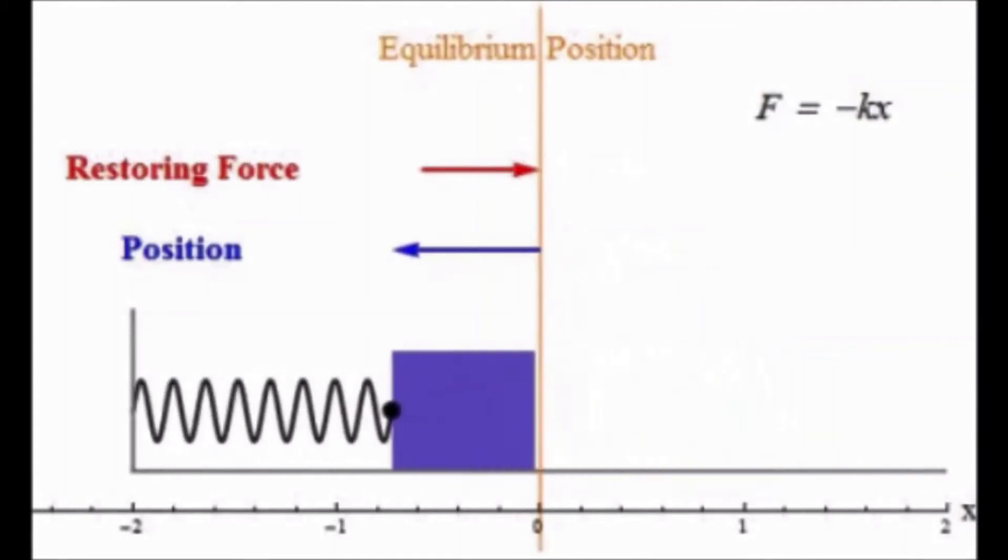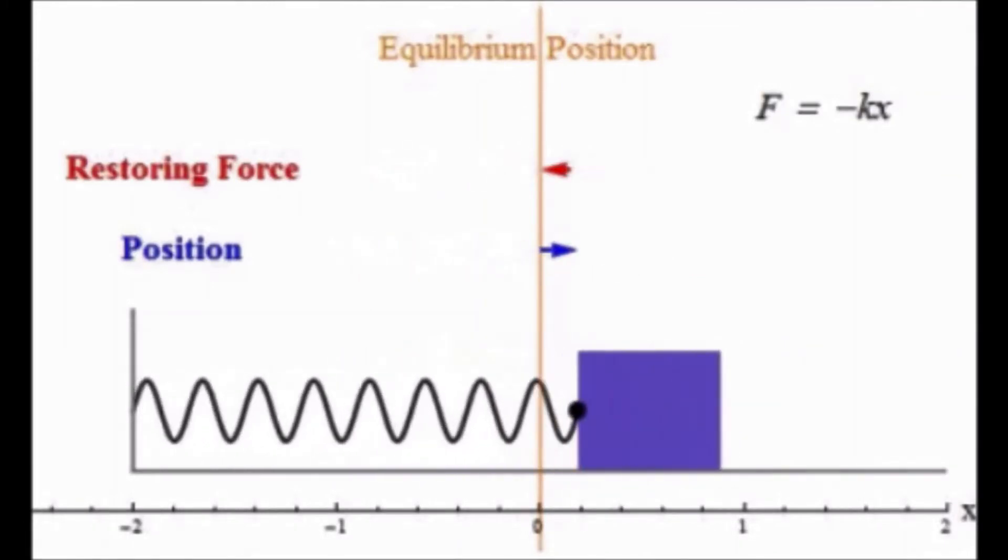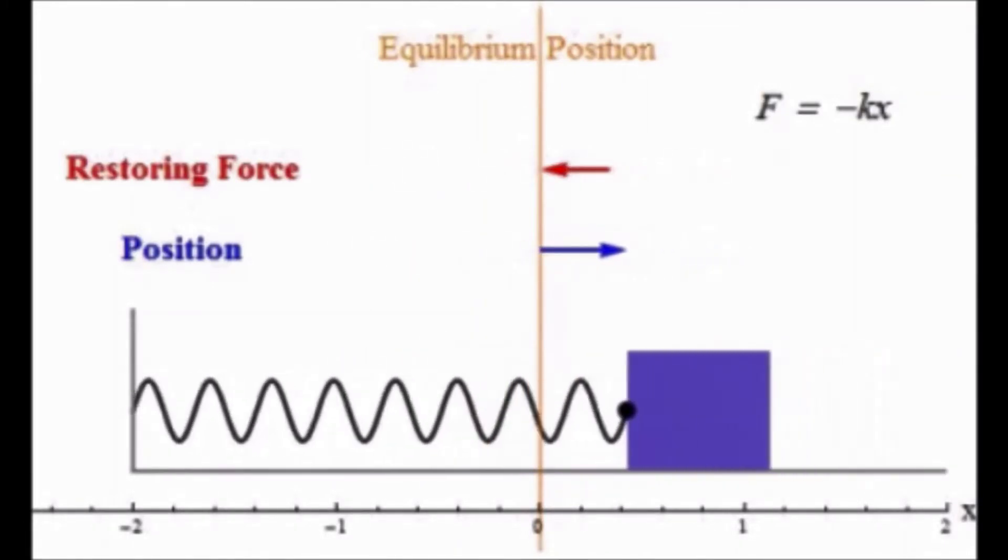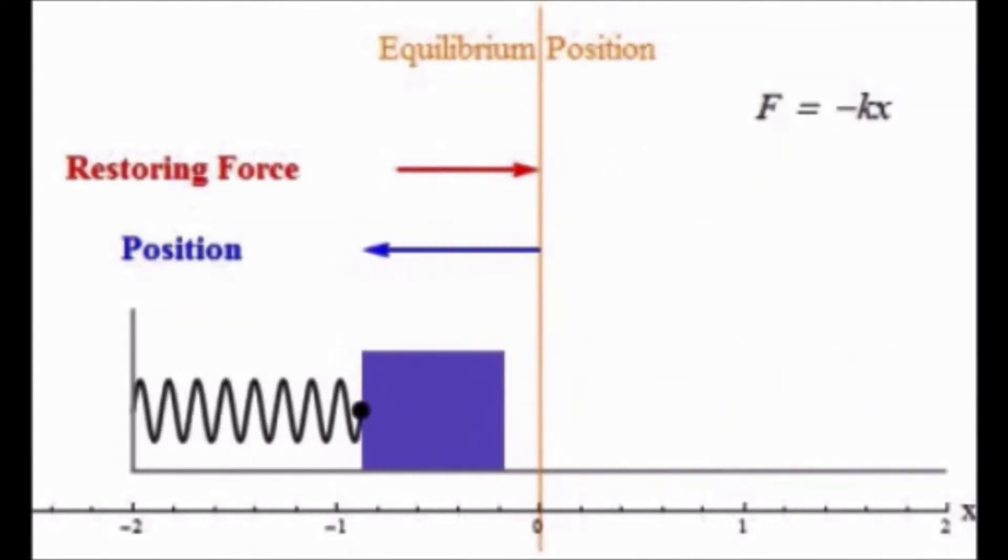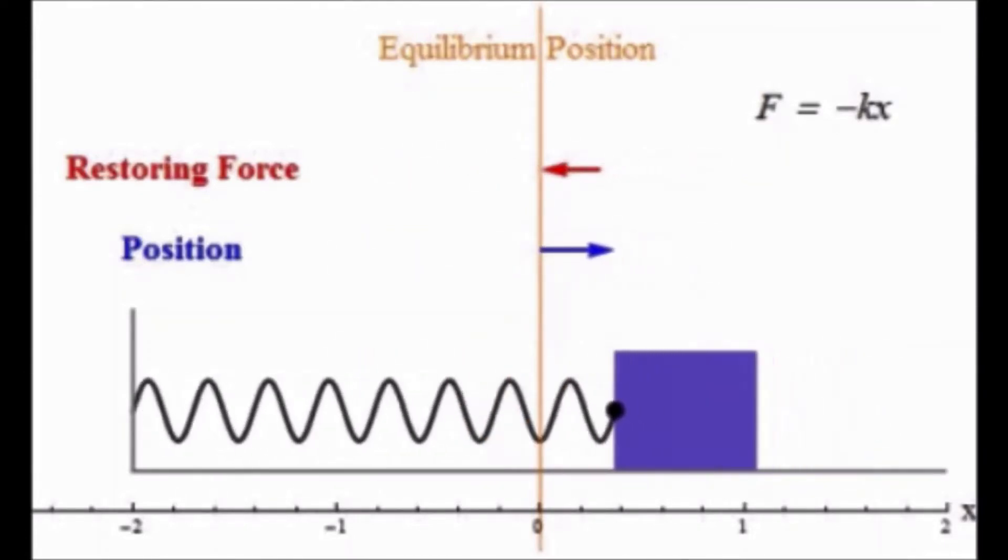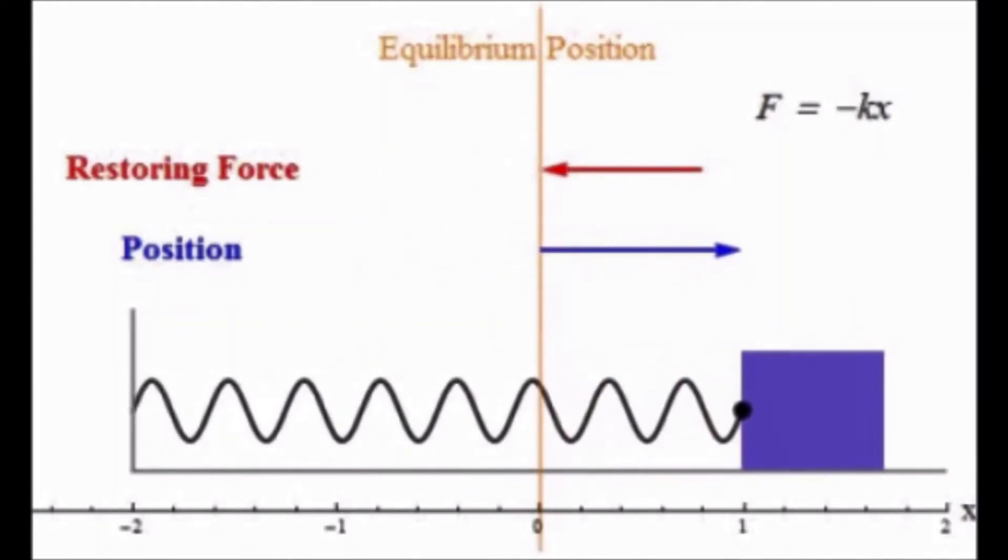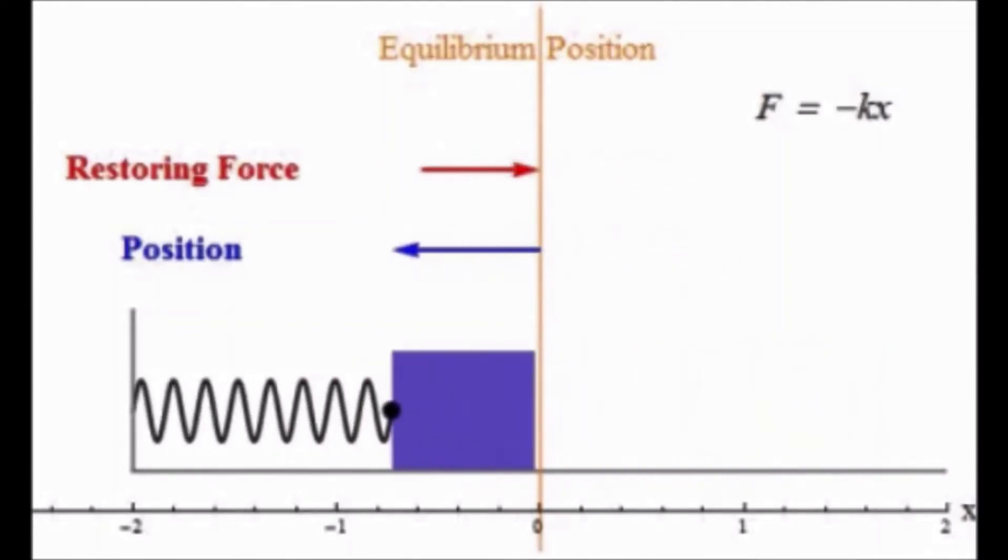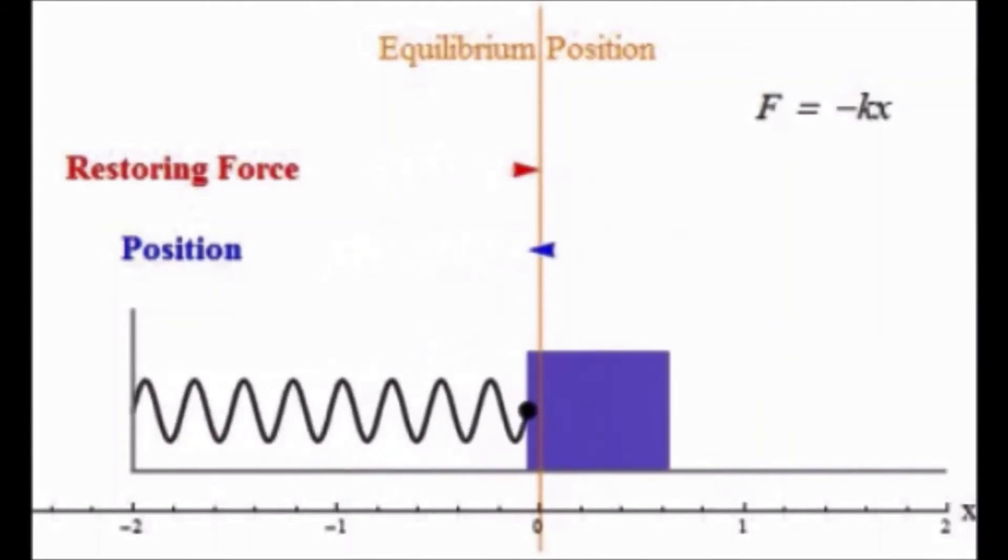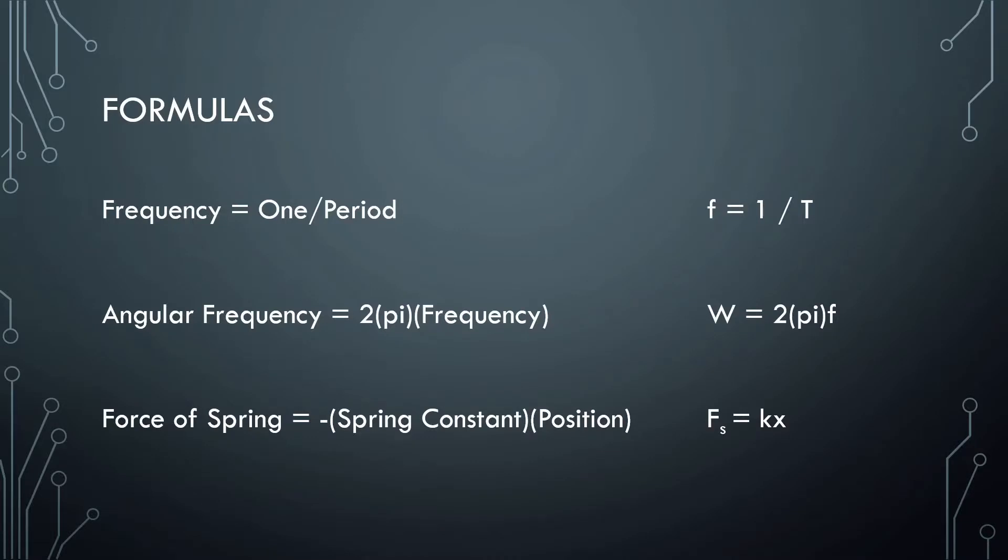So what this picture here is showing us is, as the position is to the right, the force is to the left. And as the position is to the left, the force is to the right. So that's the main thing here. The position and the force are always going to be in the exact opposite direction to each other. Same as the position and acceleration, they're always going to be in the opposite direction.